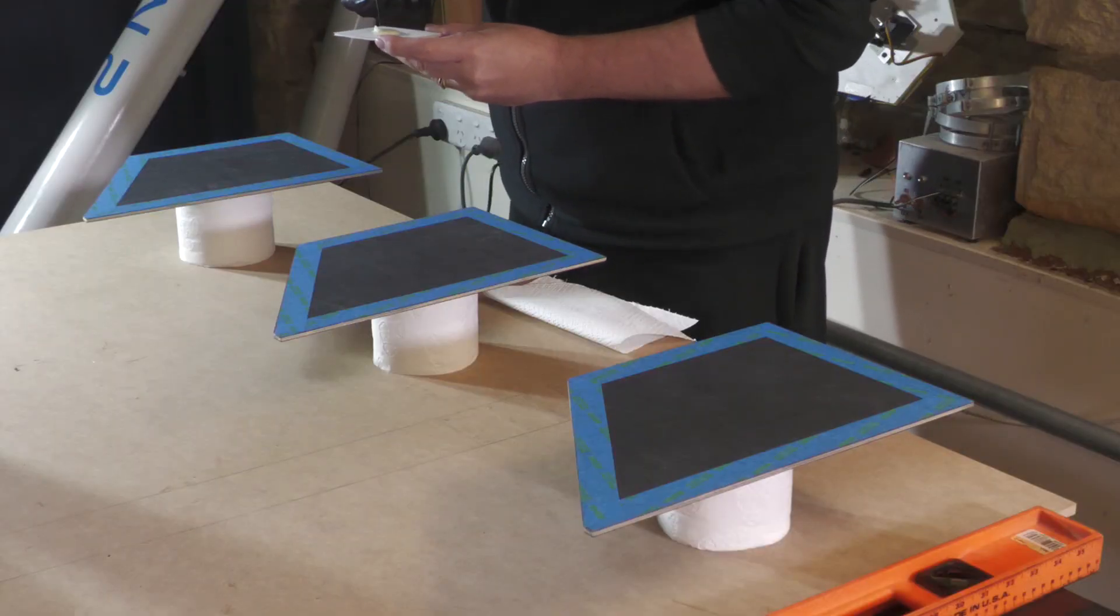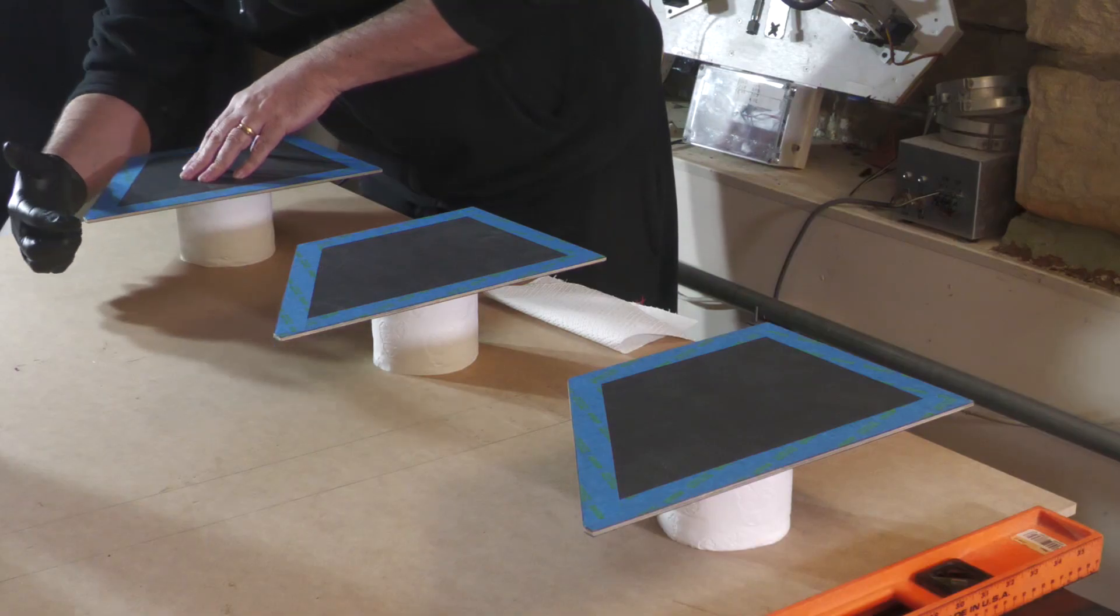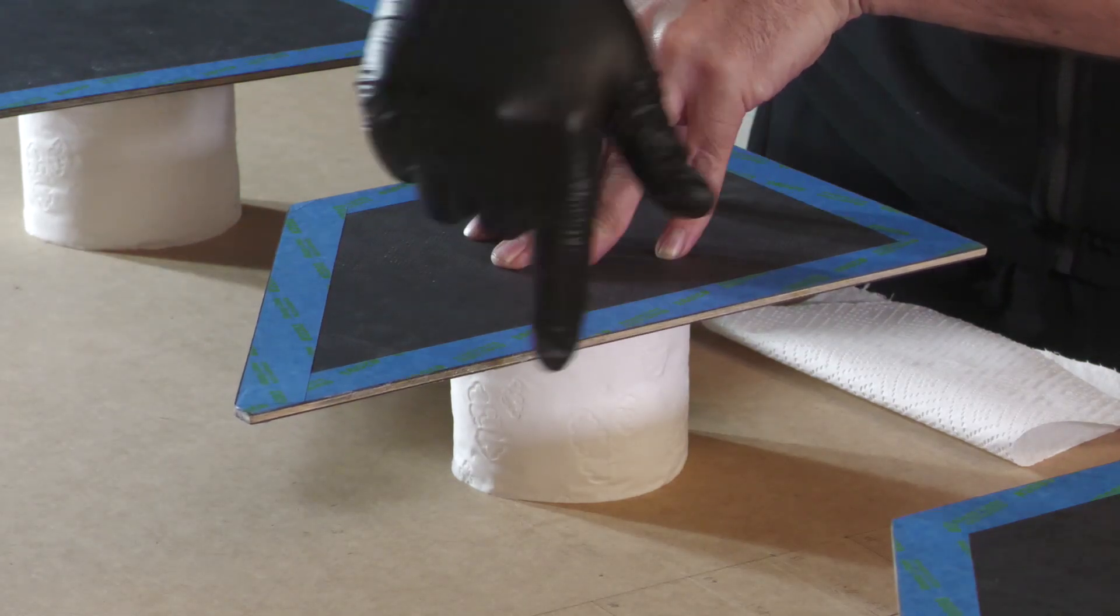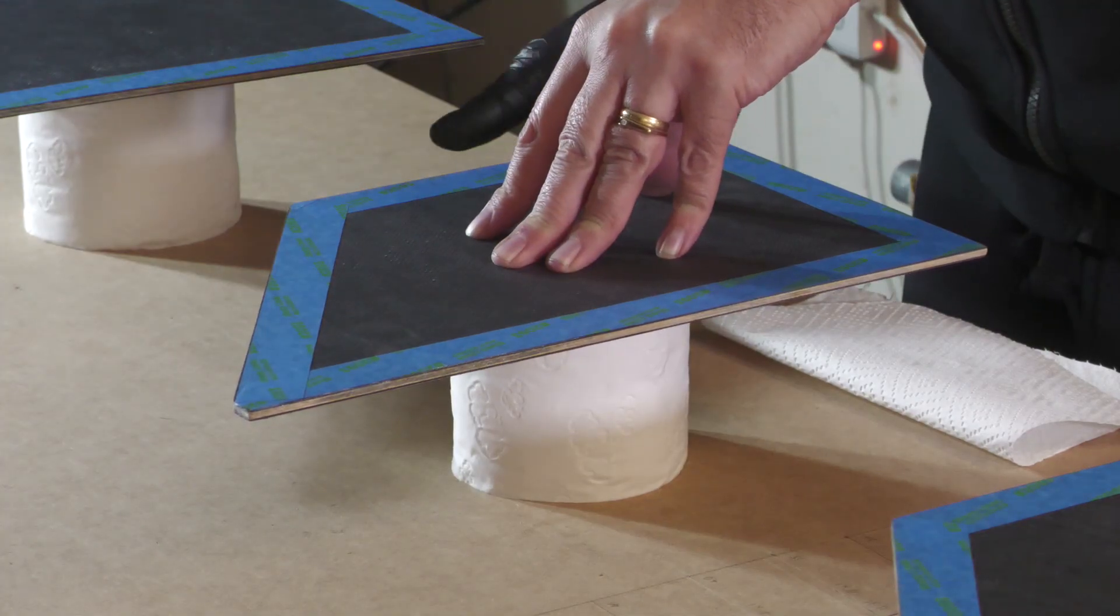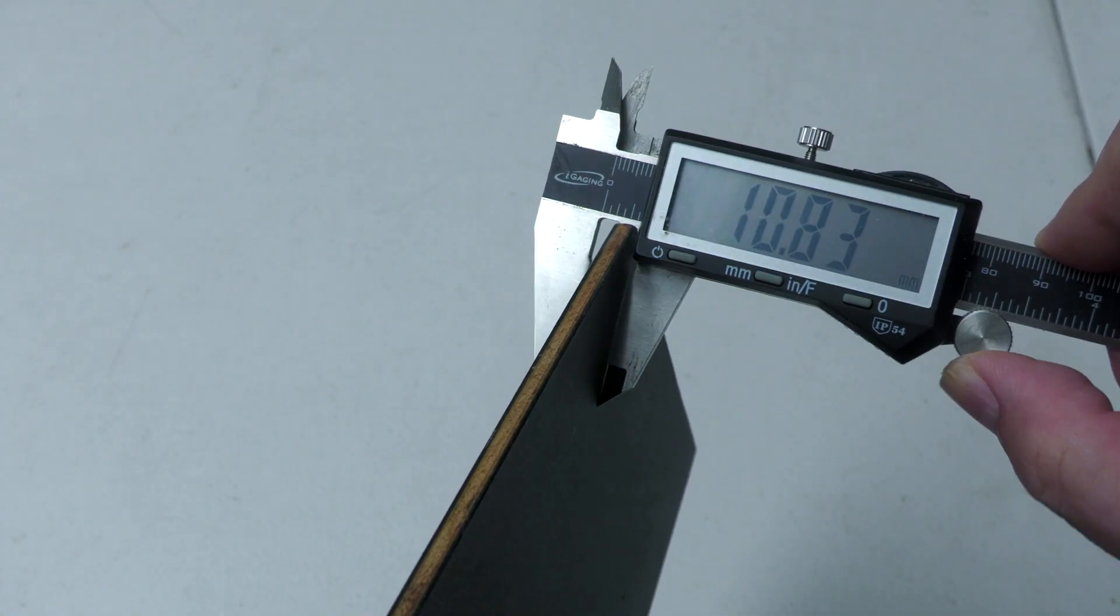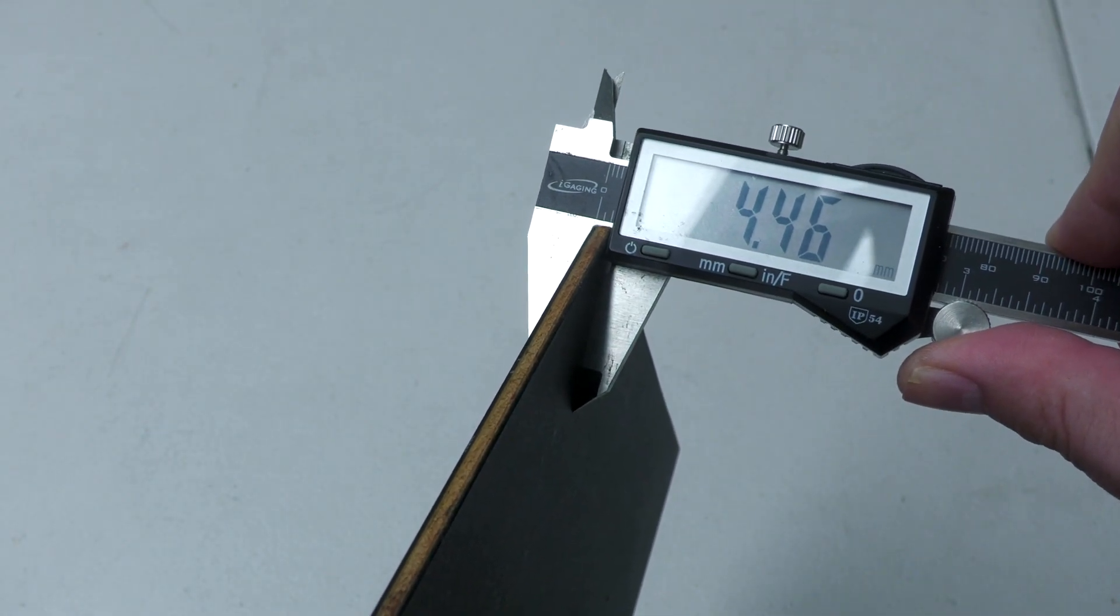Because the edge of the plywood is exposed, we apply a couple of coats of epoxy over the edge to seal it. A finger was the easiest way to apply the coat of epoxy. The fins are about four and a half millimeters thick.